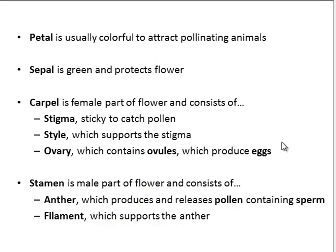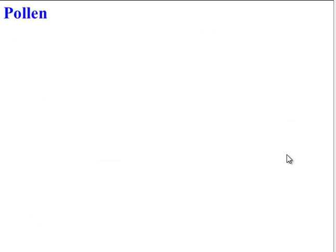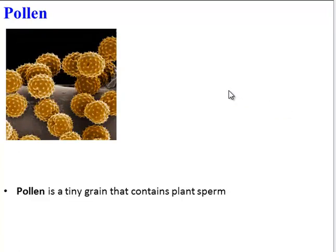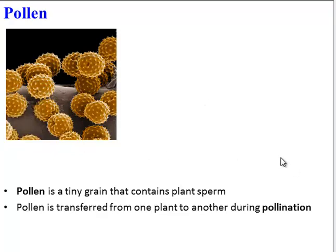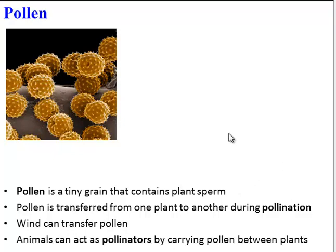Here's a summary of those structures and functions for your notes. Now let's take a look at pollen, because this is a really important adaptation for angiosperms. Pollen is basically tiny grains each containing plant sperm. Pollen has to be transferred from one plant to another during a process known as pollination, and this can happen in a few ways. Wind can transfer pollen because pollen is so lightweight, but animals can also act as pollinators by carrying pollen between plants.